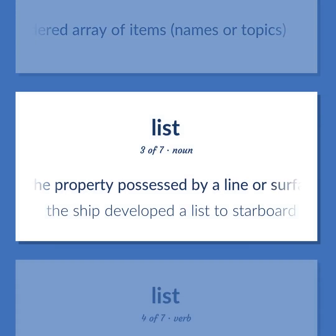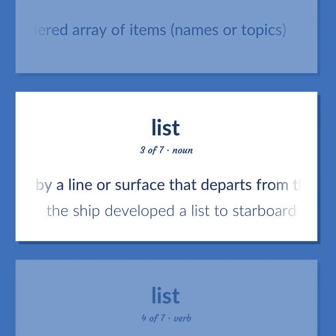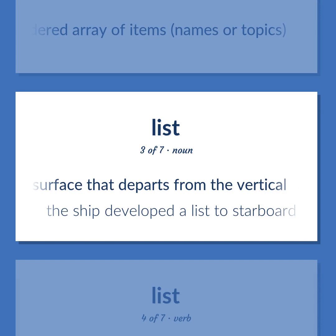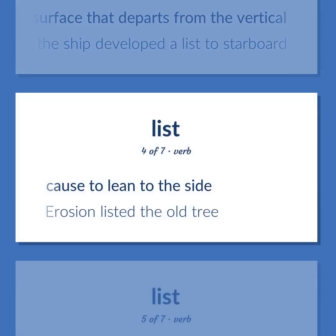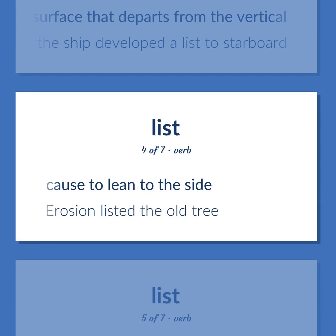List: The property possessed by a line or surface that departs from the vertical. Example: 'The ship developed a list to starboard.' Cause to lean to the side. Example: 'Erosion listed the old tree.'